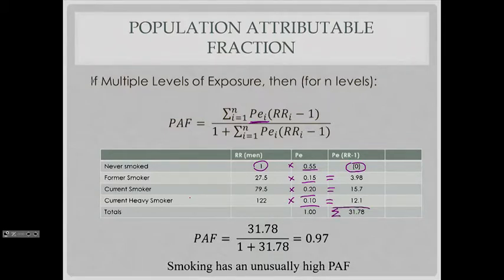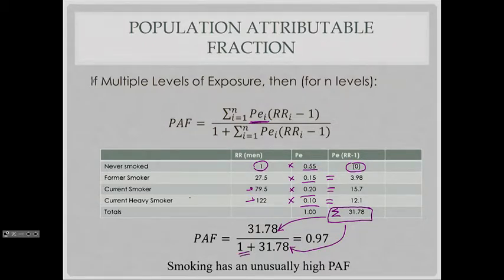If we plug that into our multiple level of exposure formula, both into the numerator and the denominator, we get a value here. Notice because the value is so high, and it's so high because we have such high percentages here, that value is so high that we end up with a very high fraction. Notice we're always going to have one more, so this value is always going to be less than one, but we end up with a very high fraction. Ninety-seven percent of people with lung cancer in the population are going to have that lung cancer attributed to the fact that they were some level of a smoker.